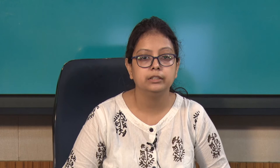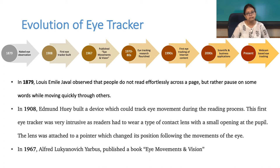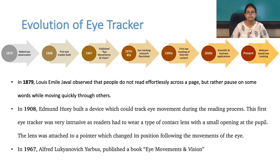We have also seen its application in research, especially in social and psychological experiments. The initial phenomena started in 1879, where an individual named Louis Amal Javal noticed that people do not read textual content smoothly. Sometimes they jump from one part of the text to another, sometimes they stop, sometimes they hurry or are slow, and sometimes they ignore portions of the text — it is not a smooth phenomenon.